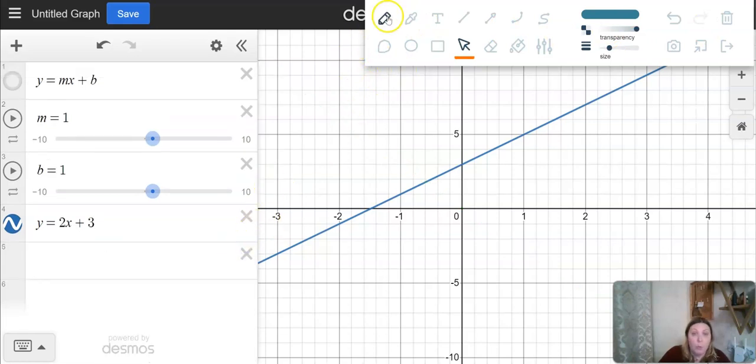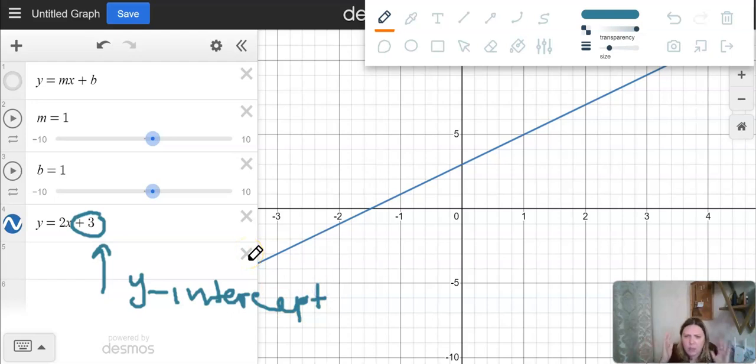So let's talk about what is slope and what is my intercept. So first let's take a look at this number. This number is called y-intercept. And the question is, well, why is it called y-intercept? What does it intercept, right?